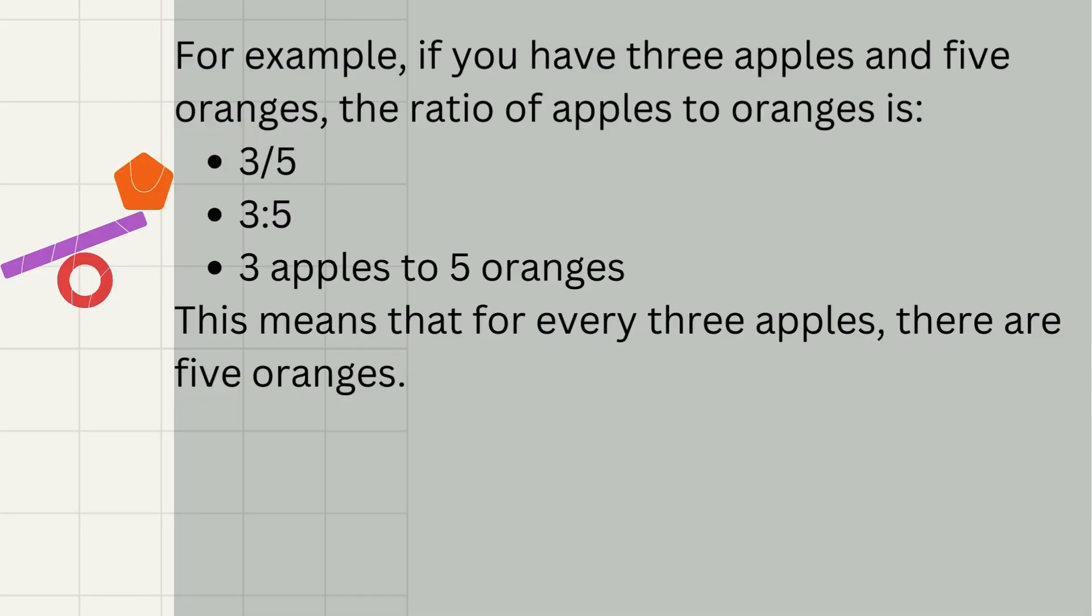For example, if you have three apples and five oranges, the ratio of apples to oranges is three over five, three to five, three apples to five oranges. This means that for every three apples, there are five oranges.